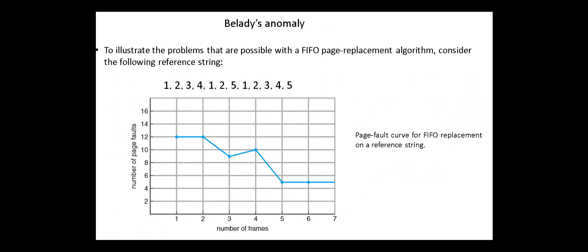First-in-first-out page replacement suffers from Belady's anomaly. In general, we know that if the number of frames allocated to a process is increased, then the page fault rate decreases. With Belady's anomaly, increasing the number of frames available can actually increase the number of page faults that occur. Consider the following reference string.